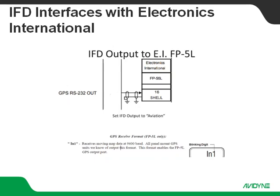We'll start with the input for the FP5L coming from the IFD. The IFD output is going to be set for aviation, and you're going to go into the FP5L and configure it for N1. That receives moving map data at a baud rate of 9600 — standard aviation format. The key is understanding that setting up N1 for GPS reception is what actually enables the FP5L GPS output port.